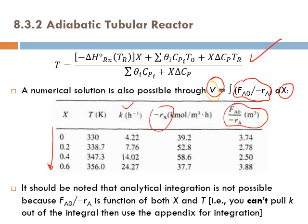It should be noted that analytical integration is not possible here, because FA0 / (−rA) is a function of both X and T. Specifically, you cannot pull K out of the integral since K depends on temperature. Therefore, this problem cannot be solved except by numerical methods.